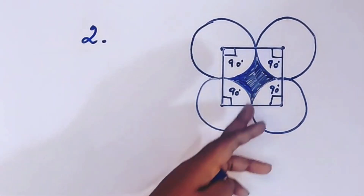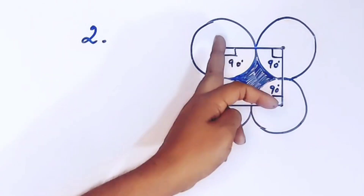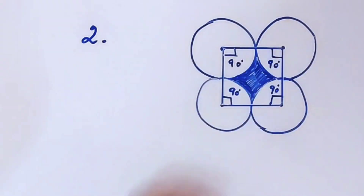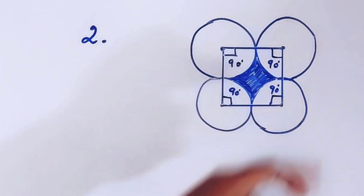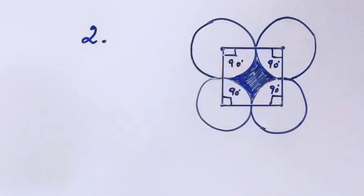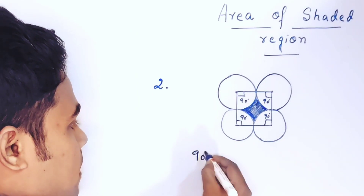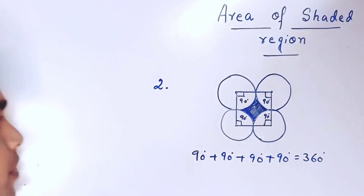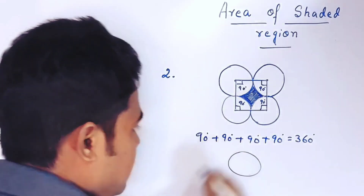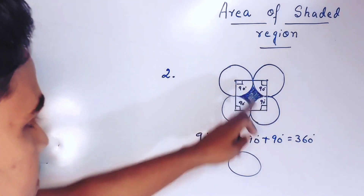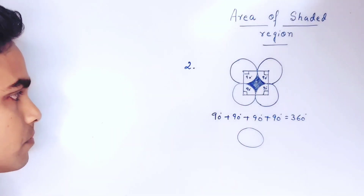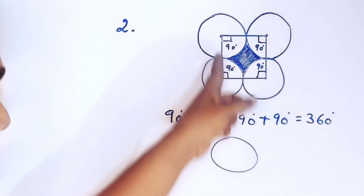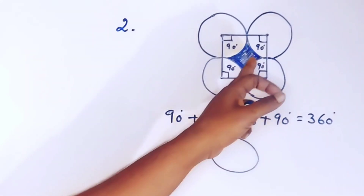To find the area of the shaded portion, we first find the area of the square, then subtract the area of these four sectors. Since each angle is 90°, adding the four sectors gives 90 + 90 + 90 + 90 = 360 degrees. So the four sectors together form one complete circle. By subtracting the area of this circle from the area of the square, we will find the area of the shaded portion.